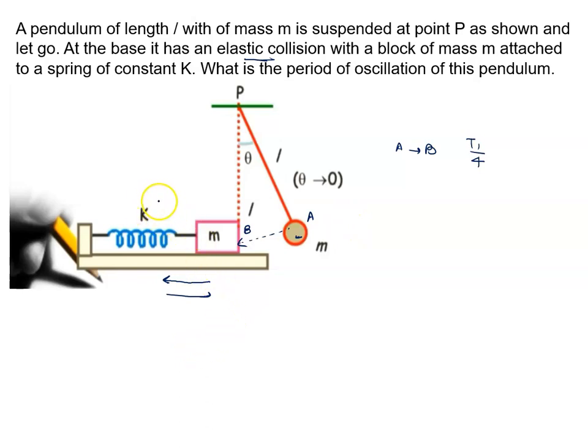If its time period of oscillation is T2, so we can say from B to C and again C to B, it is given by, means B to C and C to B again, time is written as T2 by 2.